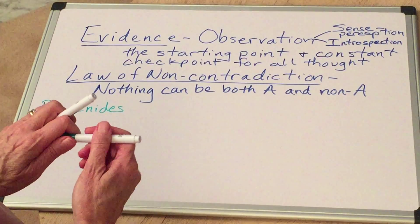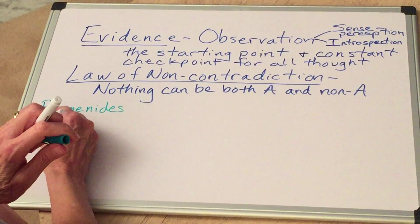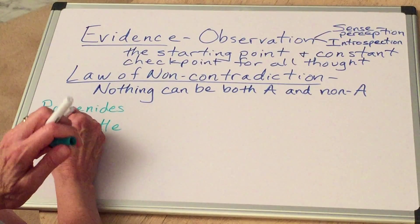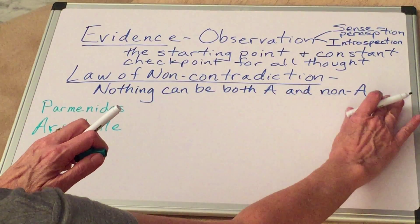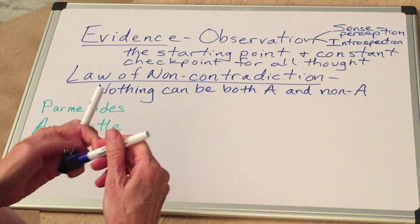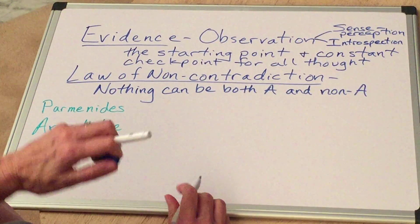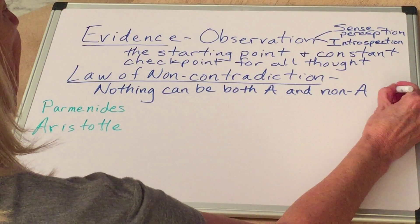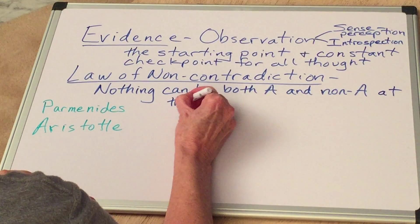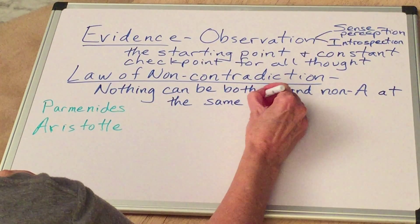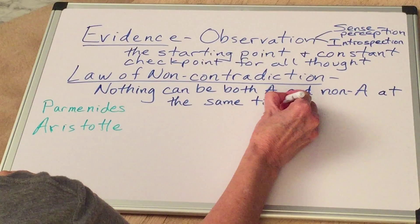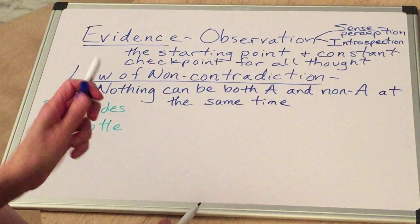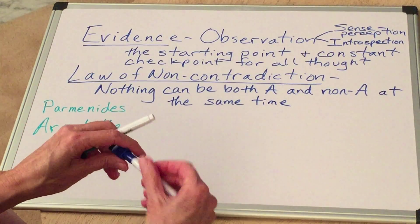Aristotle came along a couple hundred years after Parmenides. And he said, we need to put two qualifications onto the law of non-contradiction. One of them, because of change, is nothing can be both A and non-A. If we just put, at the same time, that would take care of change, right? You can't be both three feet tall and not three feet tall at the very same time, but at two different times you can, because things change.